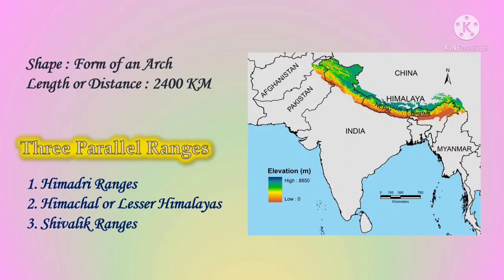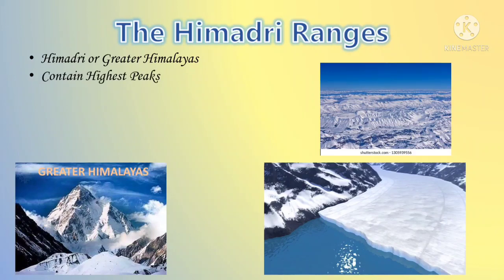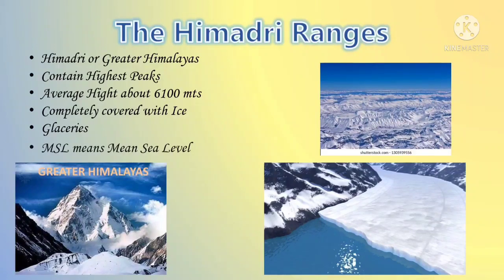There are three parallel ranges in the Himalayas: Himadri ranges, Himachal or Lesser Himalayas, and Shivalik ranges. Himadri is also called the Greater Himalayas. The highest peaks in the Himalayas are situated in the Himadri ranges, with an average height of about 6,100 meters above MSL (mean sea level). The Himadri ranges are completely covered with ice and contain glaciers.